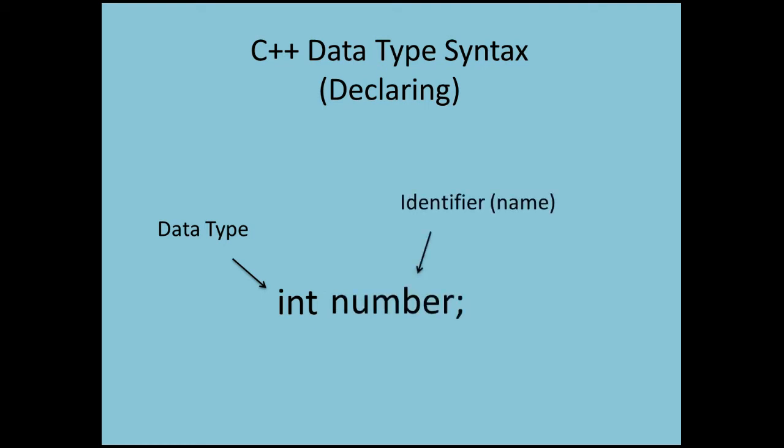Then an identifier. An identifier is just a name. So pretty much what this statement is doing is it is telling the computer to create a space in memory big enough to hold an integer, and then it's telling the computer that I'm going to refer to this integer by the identifier named number.